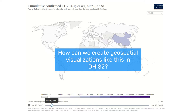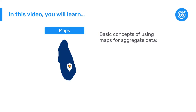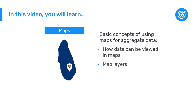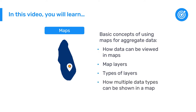How can we create geospatial visualizations like this in DHIS-2? This video will talk about the basic concepts of using maps for aggregate data in DHIS-2. You'll understand how data can be viewed in maps, the concept of map layers, and some specifics about the types of layers that can be used. We'll also learn how multiple data types can be shown in a single map using layers.